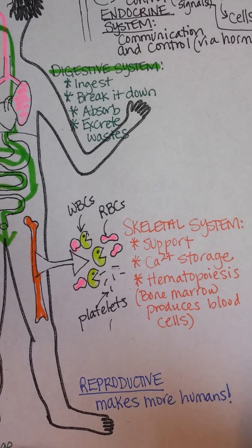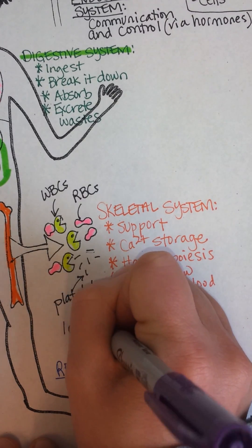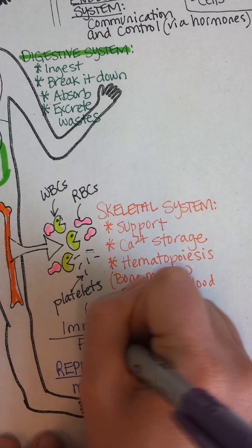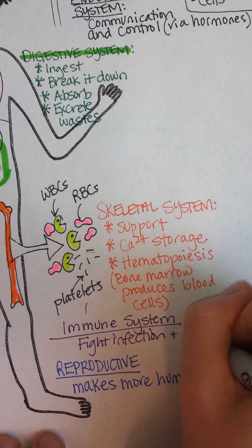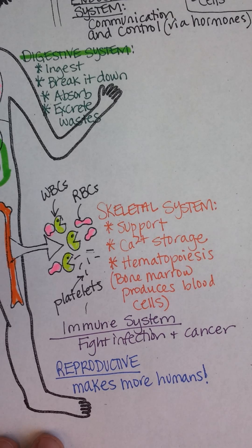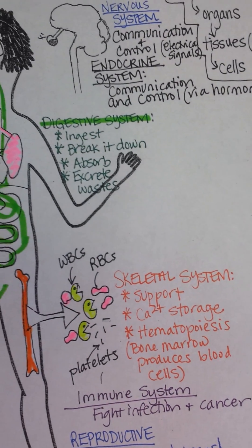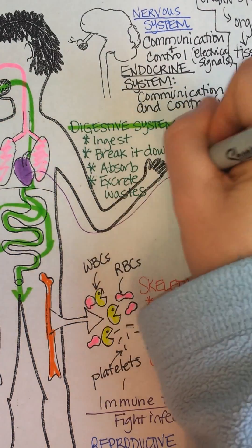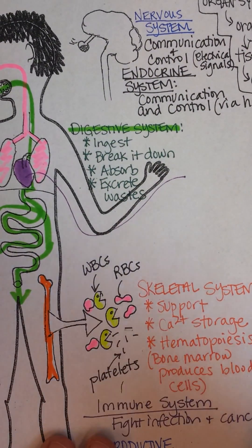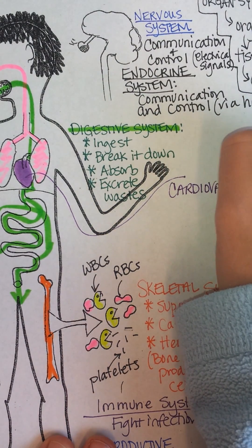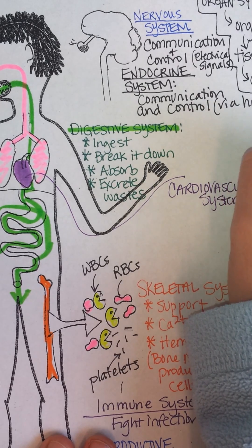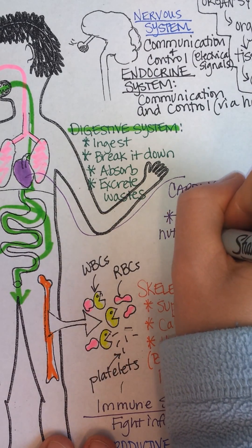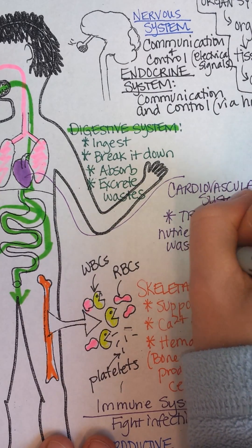This is a good place to mention the immune system. White blood cells play a big role in fighting infection and diseases like cancer in your body. And last but not least, I'm going to use a purple highlighter on the heart to describe the cardiovascular system. Its role is the transport of all those goodies: nutrients, gases, wastes, and hormones.